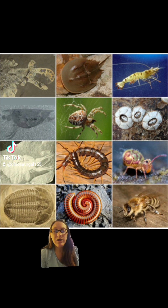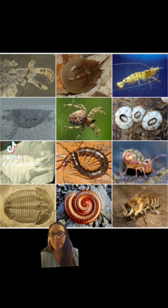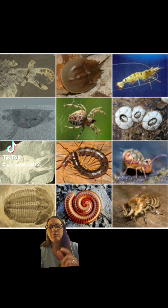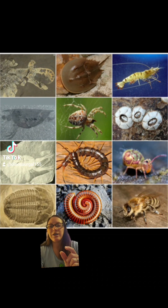In simple terms, a trilobite is just a really big sea bug — or in some cases a really small sea bug, because some of them are kind of tiny.